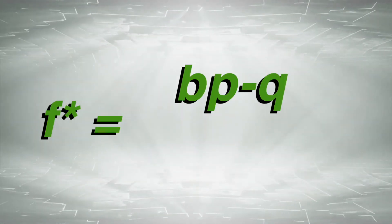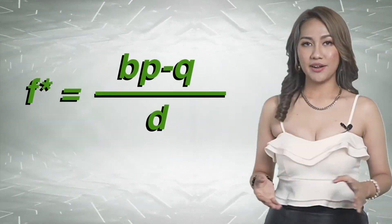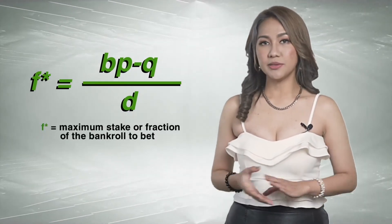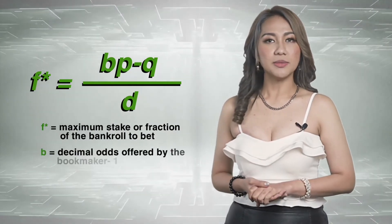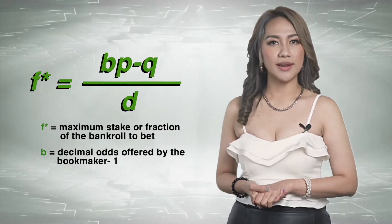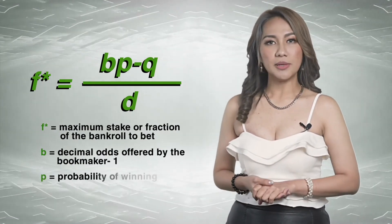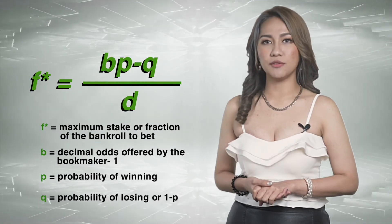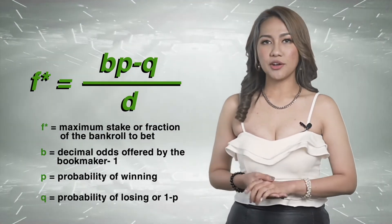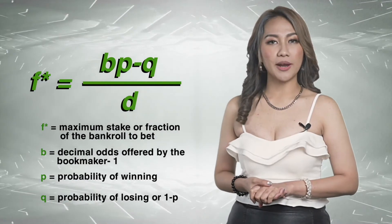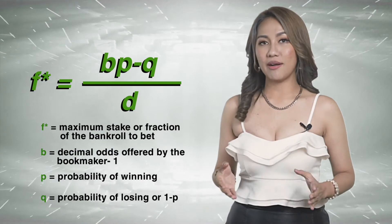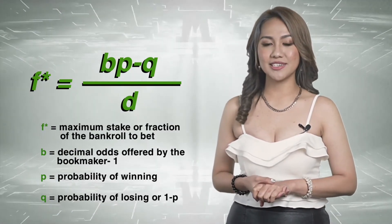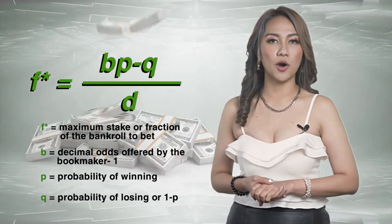The formula to calculate the bet value is: F multiple equals the maximum stake or fraction of the bankroll to bet; B equals the decimal odds offered by the bookmaker minus 1; P equals the probability of winning; and Q equals the probability of losing, or 1 minus P. Once you calculate the optimum percentage of your bankroll to bet, betting more than this amount will most definitely leave you broke, whereas sticking to this percentage or betting lesser will yield a healthy profit from your wagers.